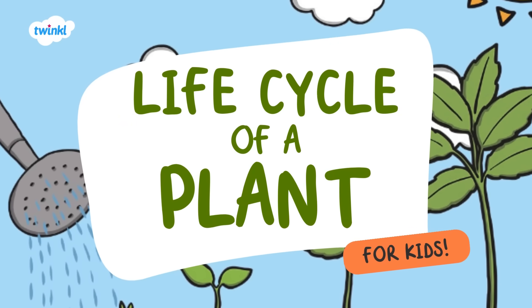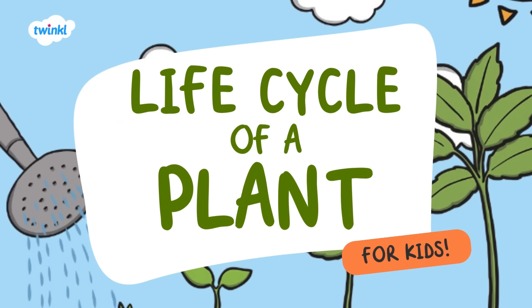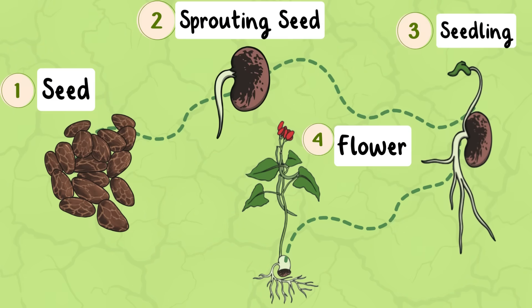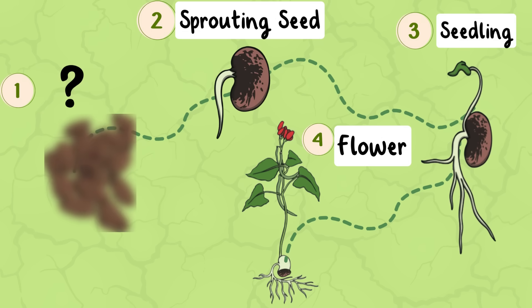Let's learn all about the life cycle of a plant for kids. Did you know that there are four life stages in a plant's life? First, the seed. Second, the sprouting seed. Third, the seedling. And finally, the flower.